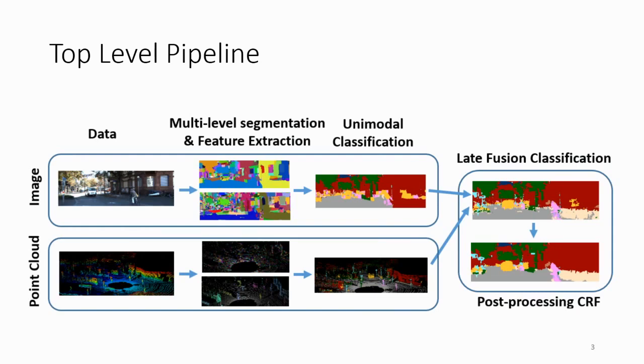Here is a top-level diagram of our pipeline. We take a late fusion approach for our algorithm, which means that we first process the images and point clouds separately. We do a multi-level segmentation and feature extraction and learn a random forest classifier on top to get a unimodal classification. From there, we train an additional late fusion classifier which fuses the unimodal predictions to get a final prediction. And from there, we add a final post-processing CRF, which boosts performance and helps enforce spatial consistency in our prediction.